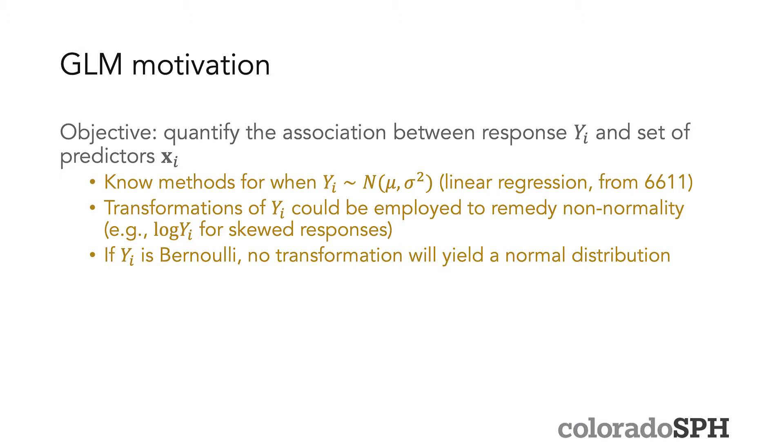And there are some cases for skewed responses where some transformation of Y_i, like the log transform, could be employed to remedy non-normality and then you can still do linear regression. However, in other cases, for example if Y_i is binary coming from a Bernoulli distribution, then there's no transformation that's going to yield a normal distribution for that outcome. So you have to employ some other type of technique and that's where GLMs come in.